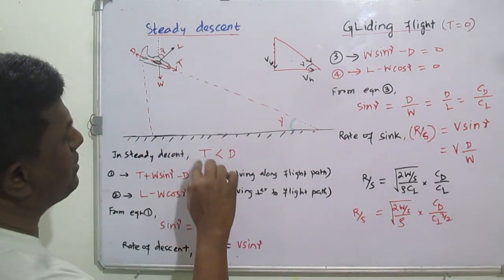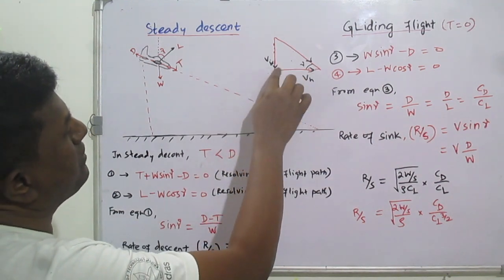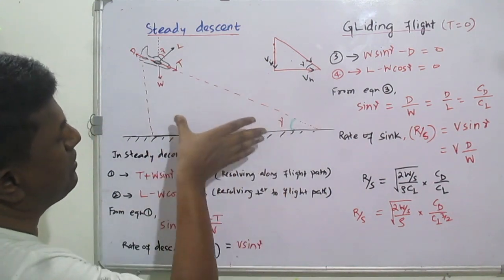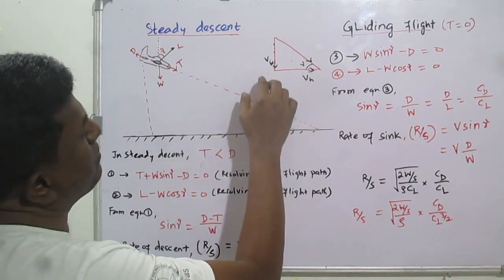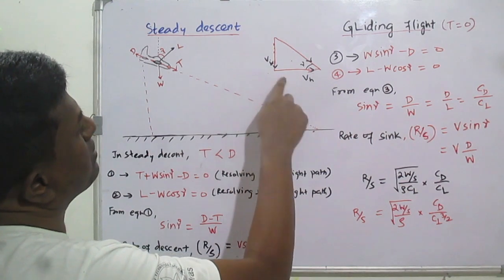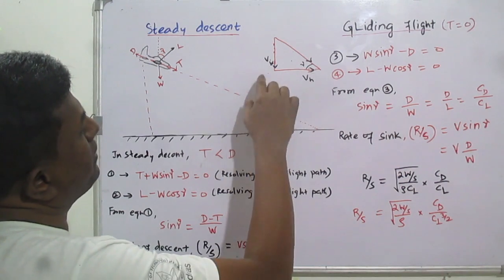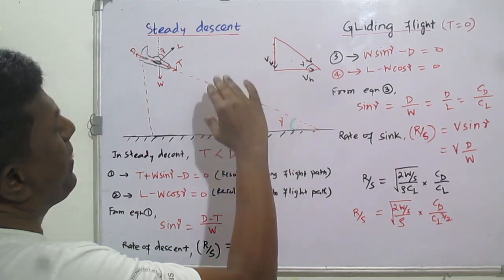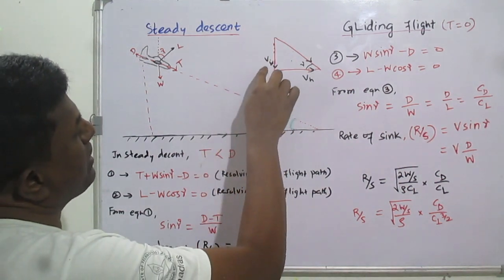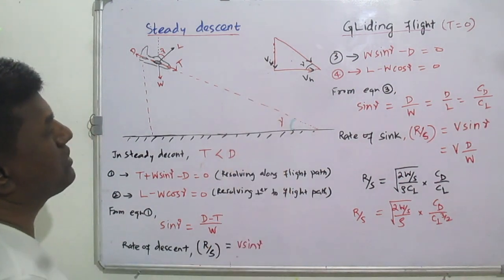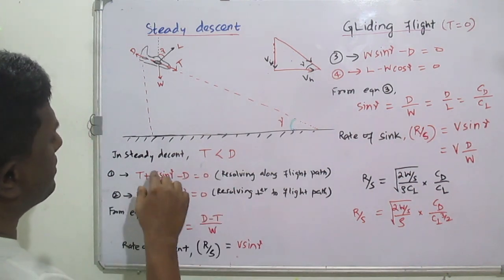In steady descent, considering lift, weight, thrust, and drag, the key condition is that thrust is less than drag. In climbing, we assumed thrust is greater than drag, whereas in steady descent it is the opposite — thrust is less than drag. We can show this through a vectorial representation.